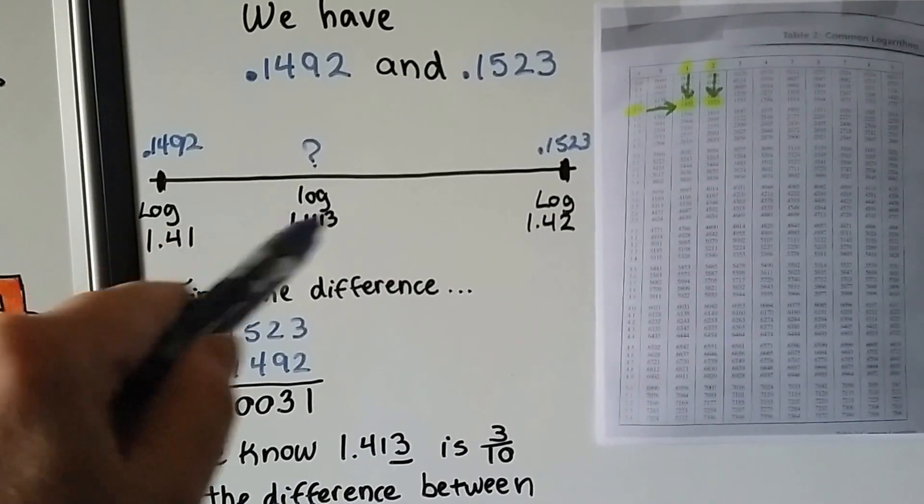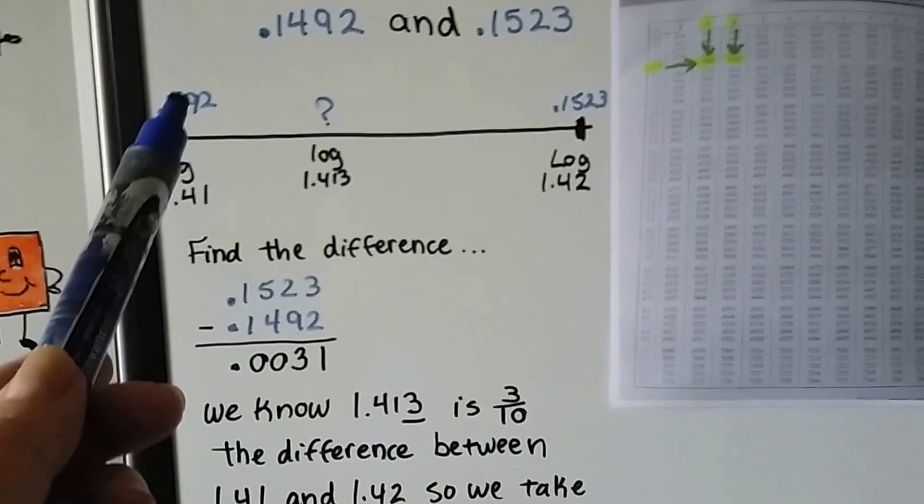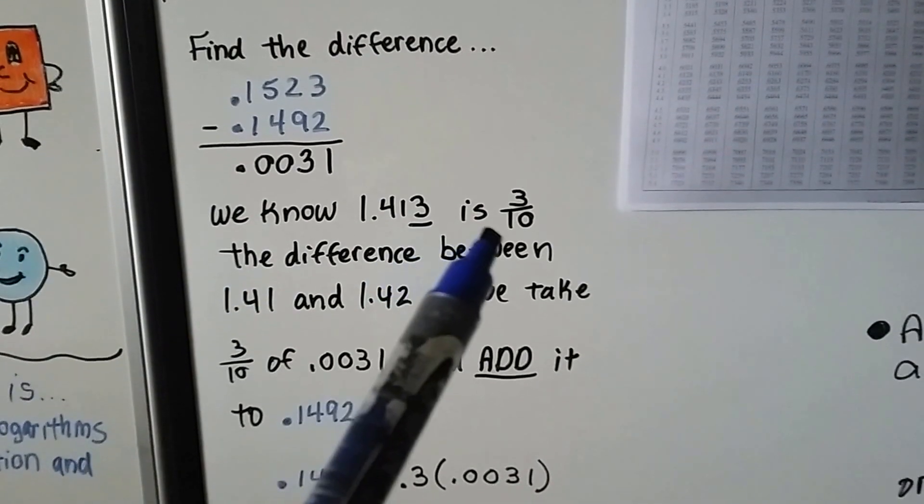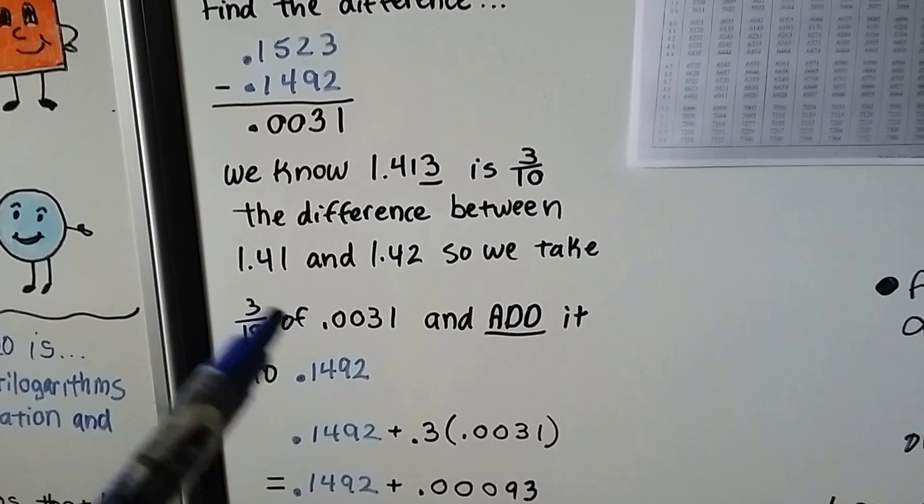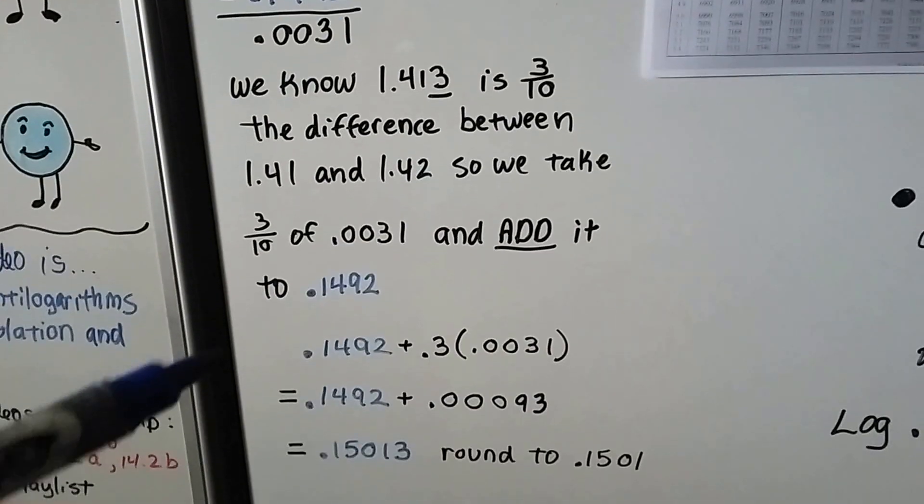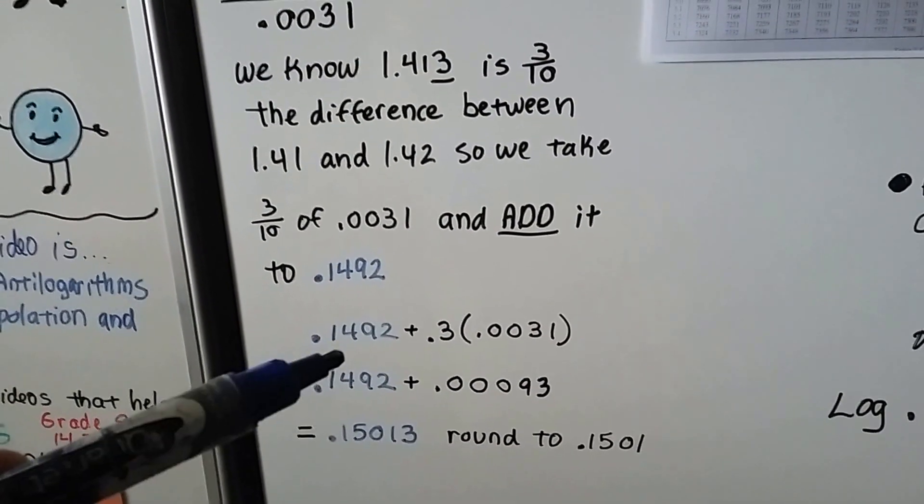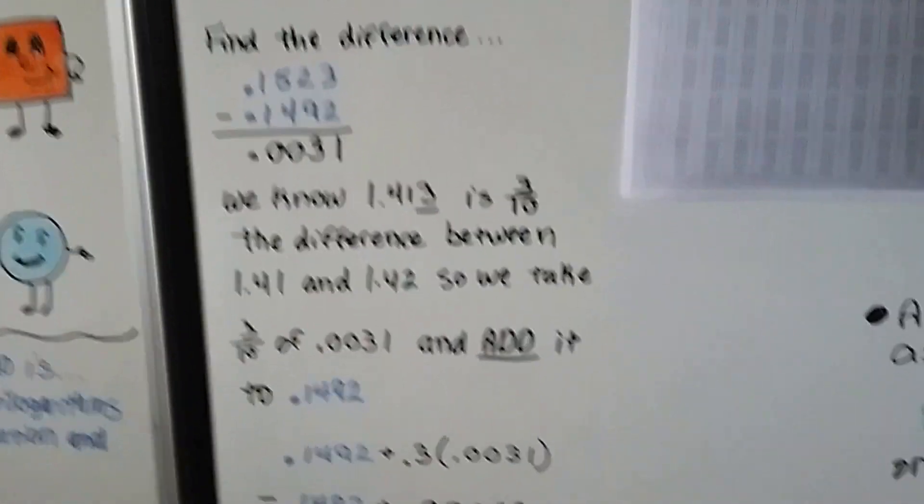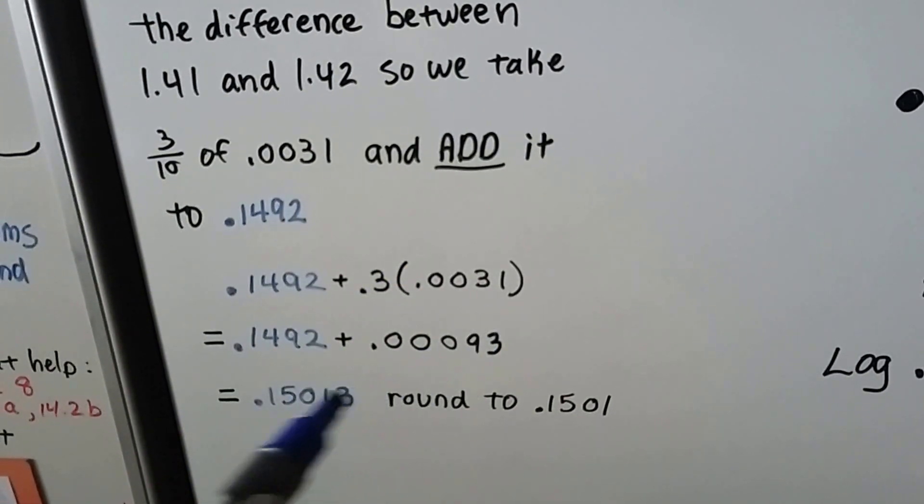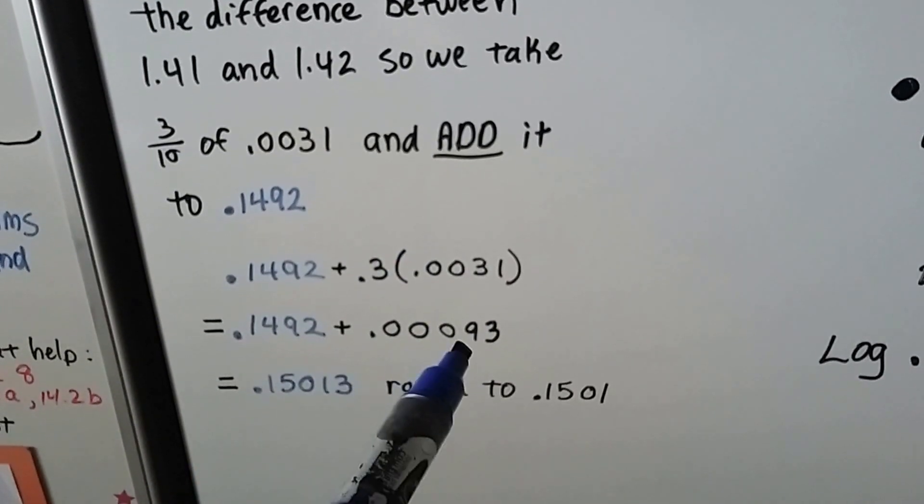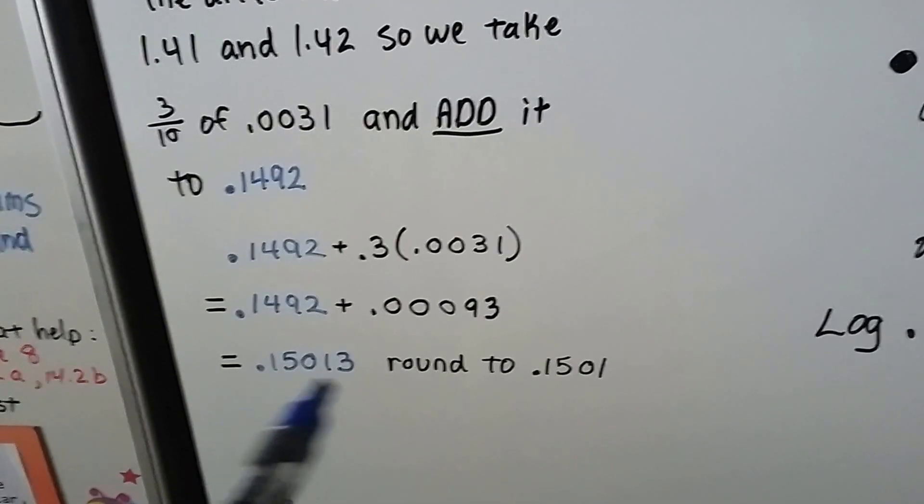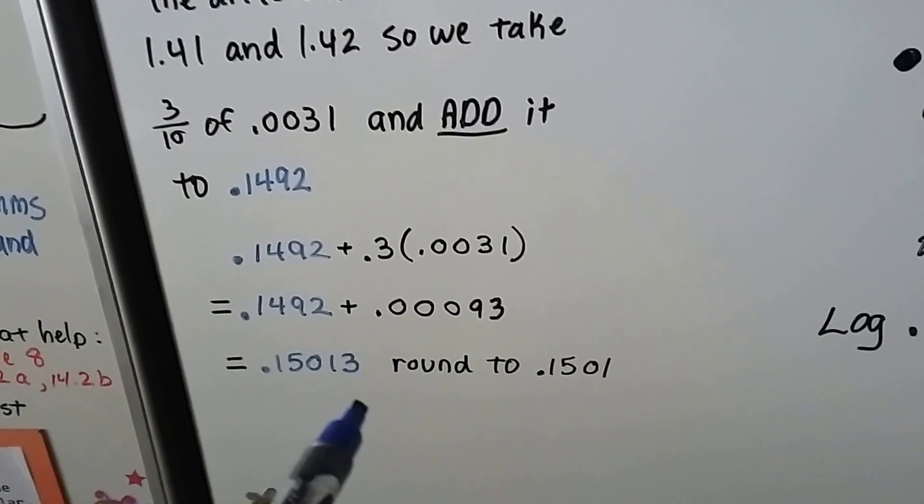We take this number from this number again, and we get 0.0031, and it's 3 tenths of the way. We have to multiply that to the 0.0031 to get that 3 tenths. We're going to add these together, and we're going to add it to this guy right here, like we did before. Now we've got 0.1492 plus 0.3 times 0.0031. This makes 0.0093. We add it to that one, and we get 0.15013. We round this, which is our mantissa, to 0.1501.